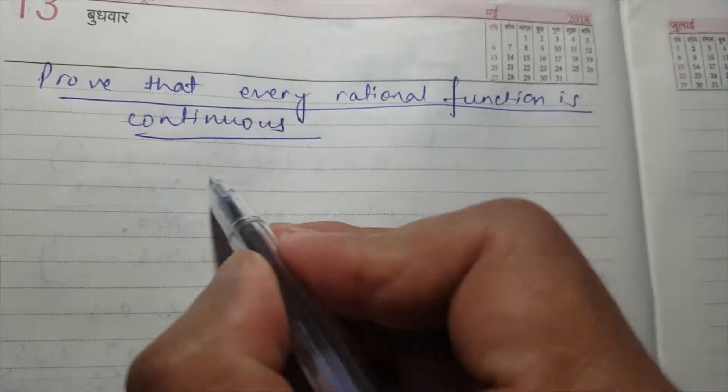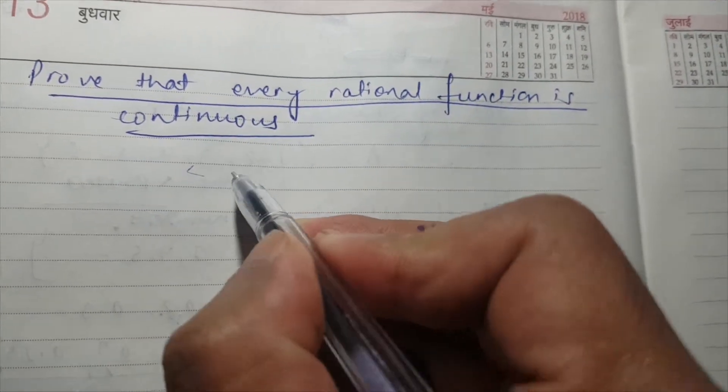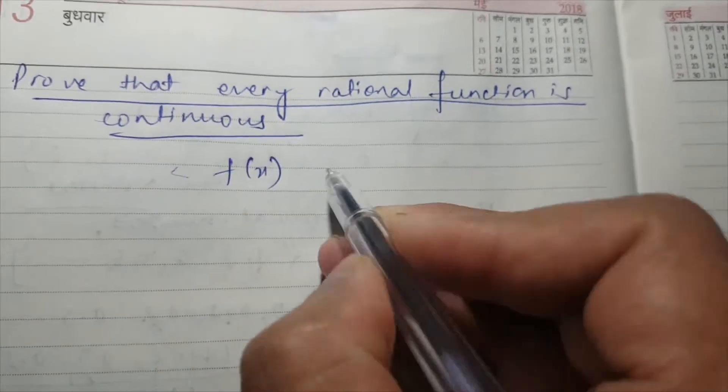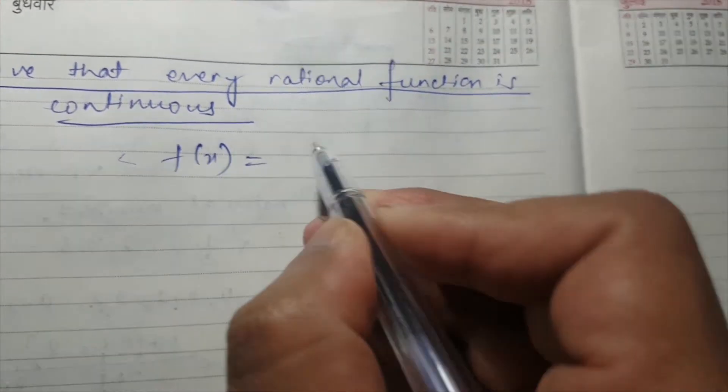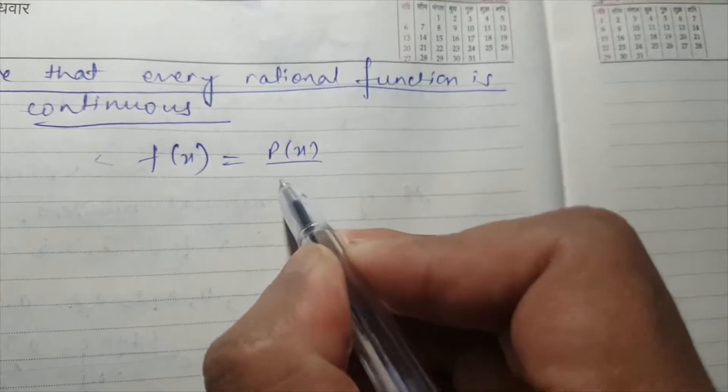So first of all, what is a rational function? Let us suppose f is a rational function, so it can be expressed as p(x) upon q(x).